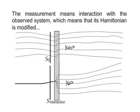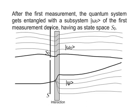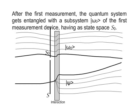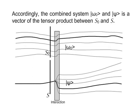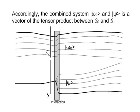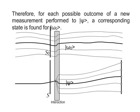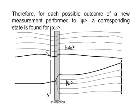The measurement means interaction with the observed system, which means that its Hamiltonian is modified in a way dependent on the free parameters of the measurement device. After the first measurement, the quantum system gets entangled with the subsystem ω0 of the first measurement device, having a state space S0. Accordingly, the combined system ω0 and ψ is a vector of the tensor product between S0 and S. Therefore, for each possible outcome of a new measurement performed to ψ, a corresponding state is found for ω0.